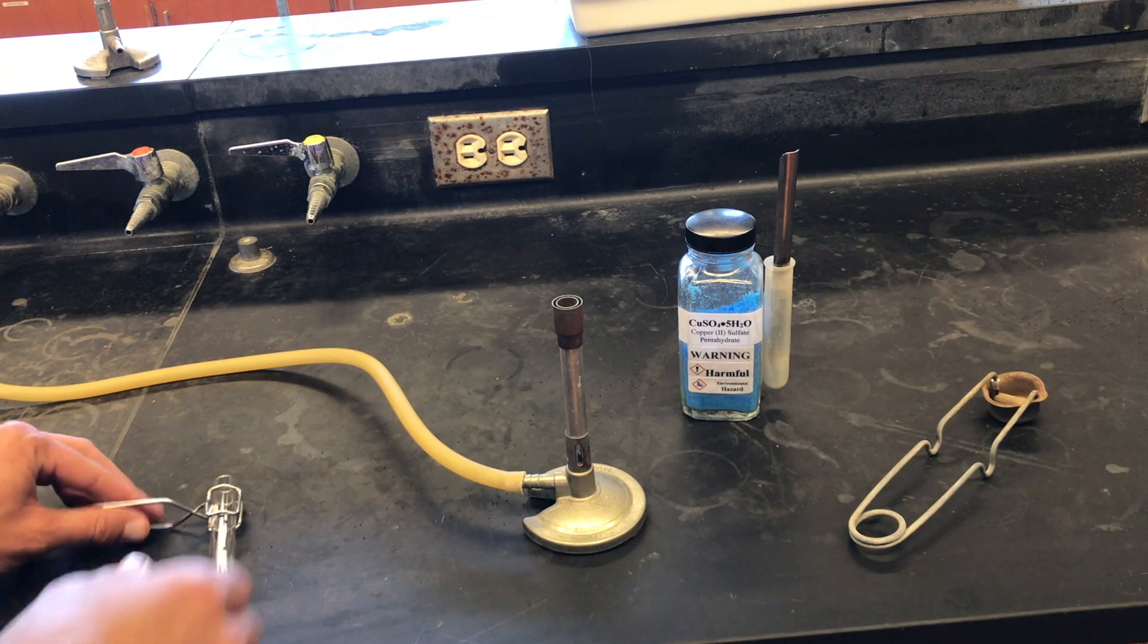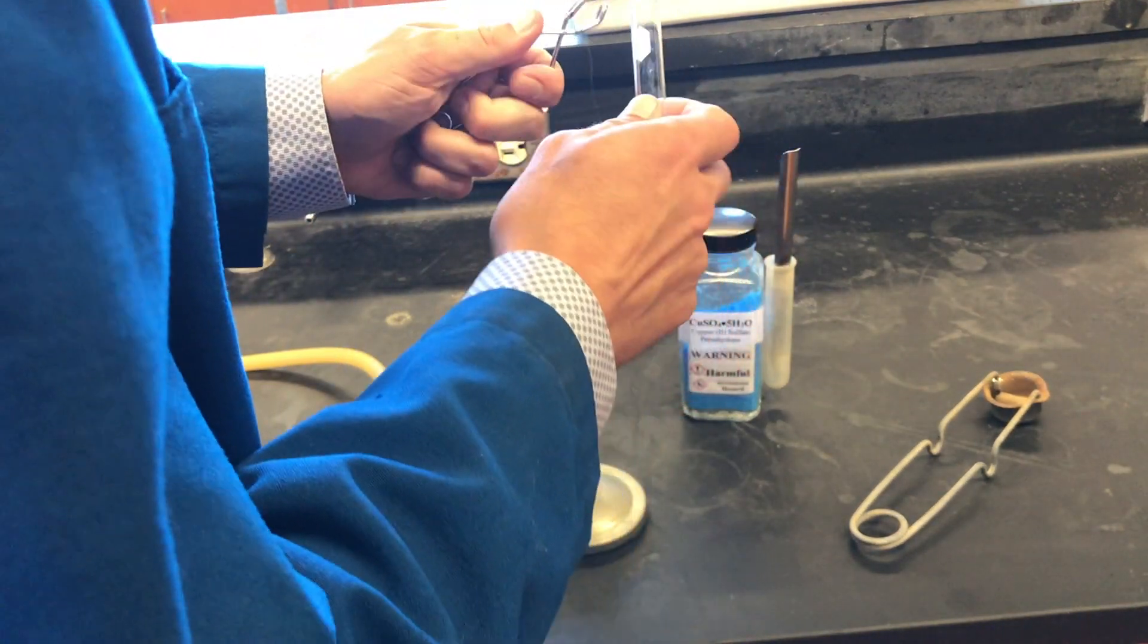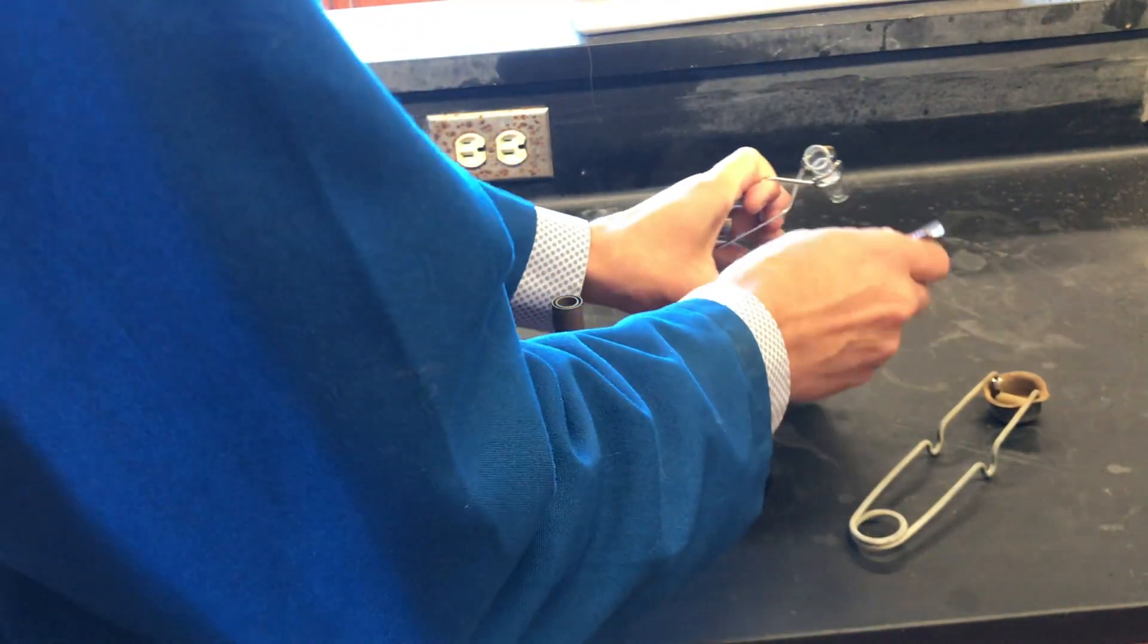Next, we're going to heat solid copper sulfate pentahydrate over a Bunsen burner. We're going to do that in a test tube and for safety purposes, we'll use a test tube holder.